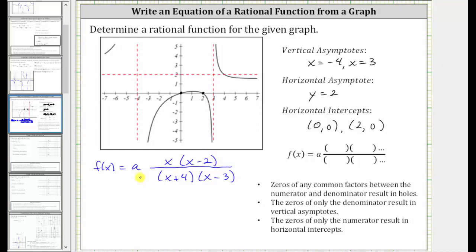And now we should be able to determine the value of a since we know we have a horizontal asymptote of y equals two. Remember, we can determine the equation of a horizontal asymptote of a rational function by analyzing the degree of the numerator and denominator. Notice how if we were to multiply out the numerator, the highest degree term would be x squared. If we were to multiply out the denominator, the highest degree term would also be x squared. So the degree of the numerator and denominator are both two, and when the degree of the numerator and denominator are the same, the ratio of leading coefficients gives us the equation of the horizontal asymptote.